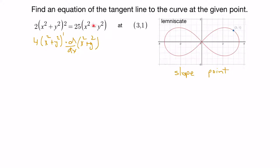Looking at the right side, we can do the same thing. I'll put a 1 there for the exponent, then use the power rule again: 1 times 25 is 25, giving us (x² − y²) taken to the exponent 0, times the derivative with respect to x of x² − y². Chain rule.